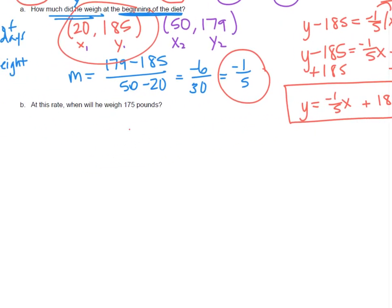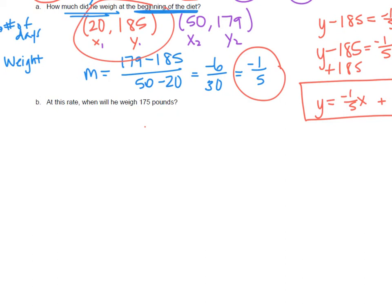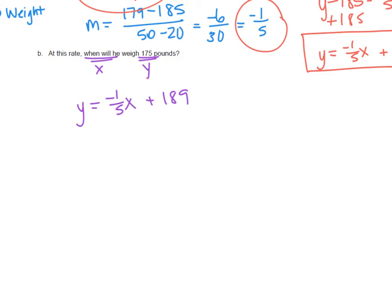Alright, there's a part B. At this rate, if he continues to lose this amount each day, when will he weigh 175 pounds? So 175 is a weight measurement, which is the Y. Let me write our equation: Y equals negative 1 fifth X plus 189. When will he weigh that? That's the X value, so we are going to plug in 175 for the Y and solve this for X.